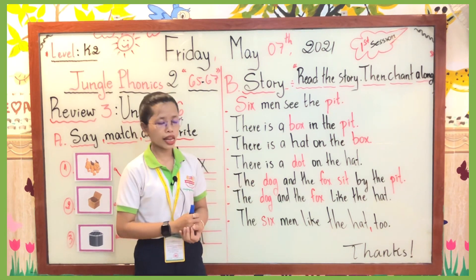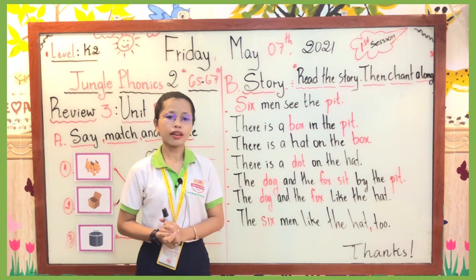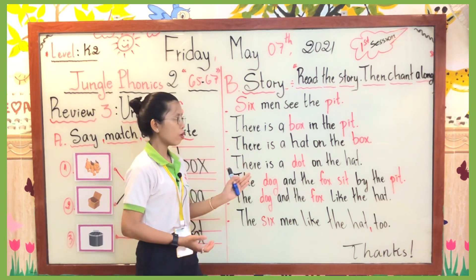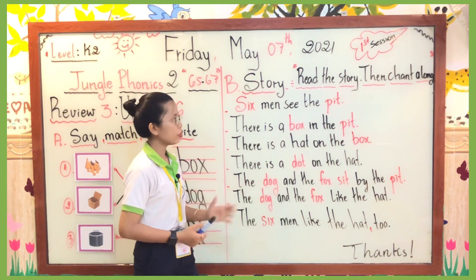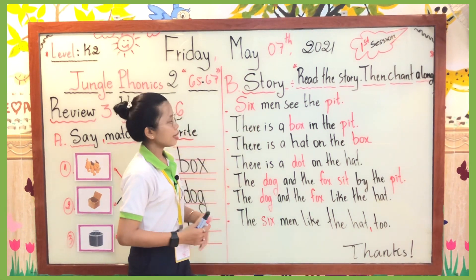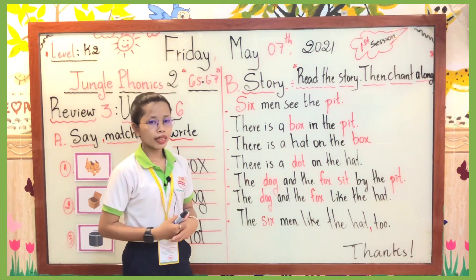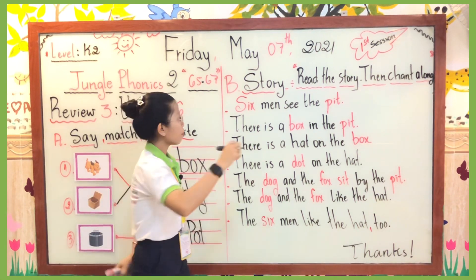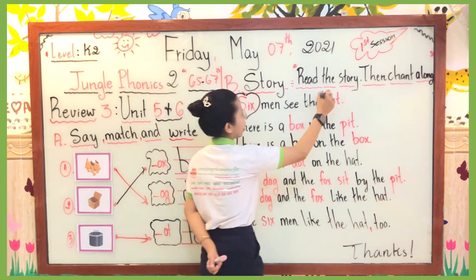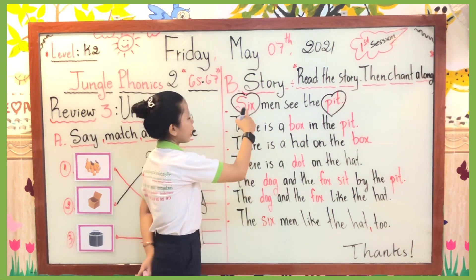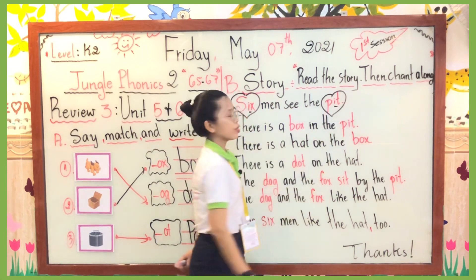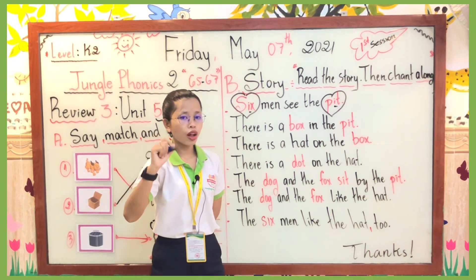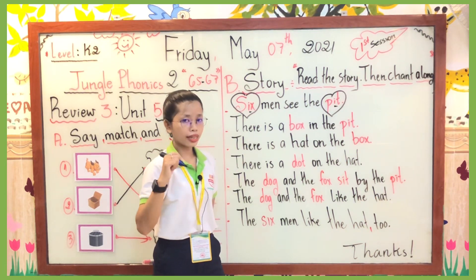Now it's time to find all the vocabulary words in our story that have two sounds — short vowel LO and short vowel LI. In the sentence 'Six men see the pit,' the words with short vowel LI are 'six' (I-X sound) and 'pit' (I-T sound). In 'There is a box in the pit,' we have 'pit' for short vowel LI and 'box' (O-X sound) for short vowel LO.